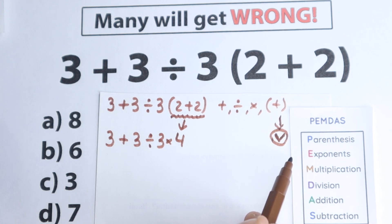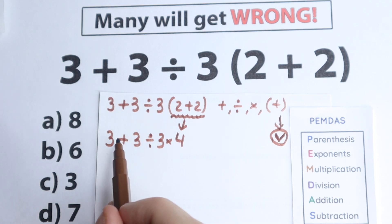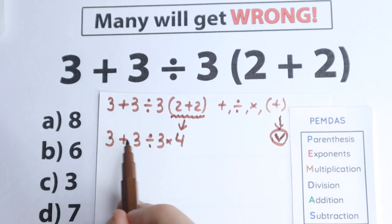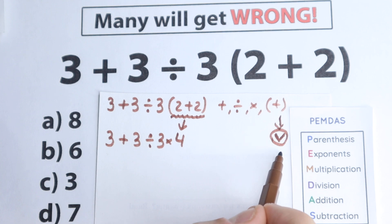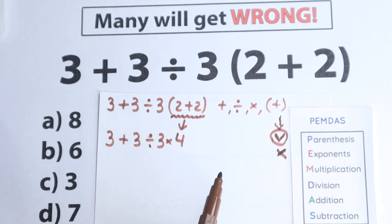The next step is exponents. Let's look for exponents in our expression — maybe we have exponents here. We don't see any squares, cubes, or any exponents, which is really great. So we just skip this part since we don't have any exponents. The next step is multiplication.